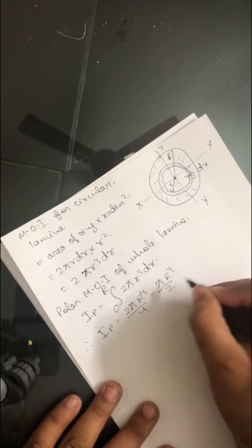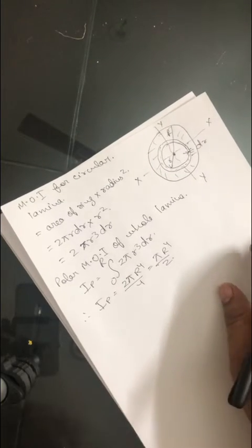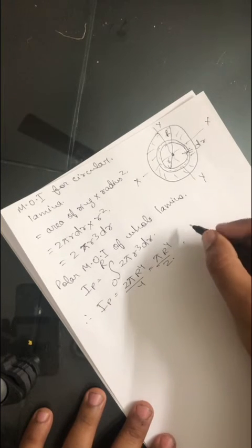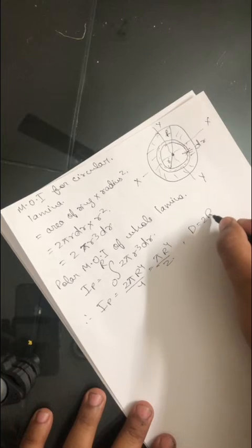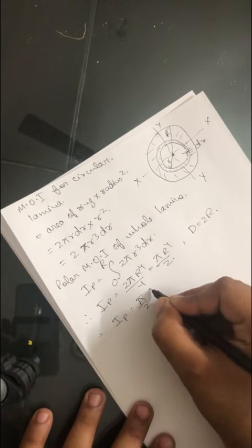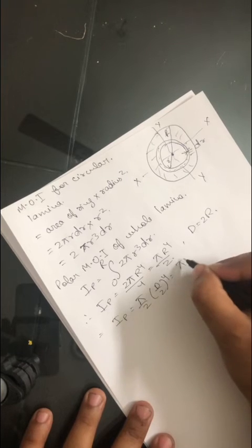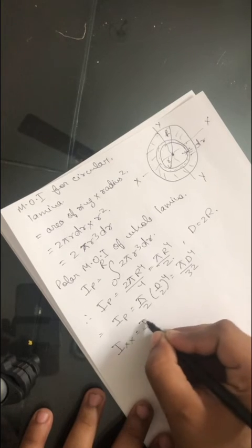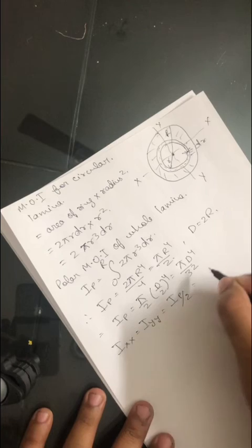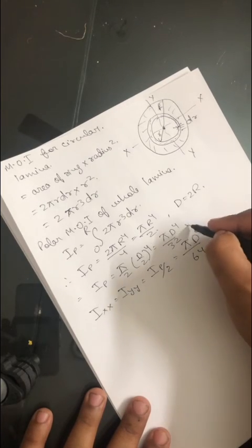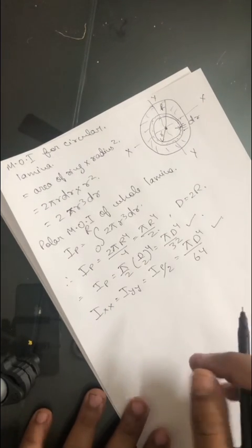This result is about the polar axis. If D is given instead of R, substituting R equals D/2 gives Ip equals πD⁴/32. Then, using the perpendicular axis theorem, Ixx equals Iyy equals Ip/2, which equals πD⁴/64. Remember: πD⁴/32 is about the polar axis, and πD⁴/64 is about Ixx and Iyy.